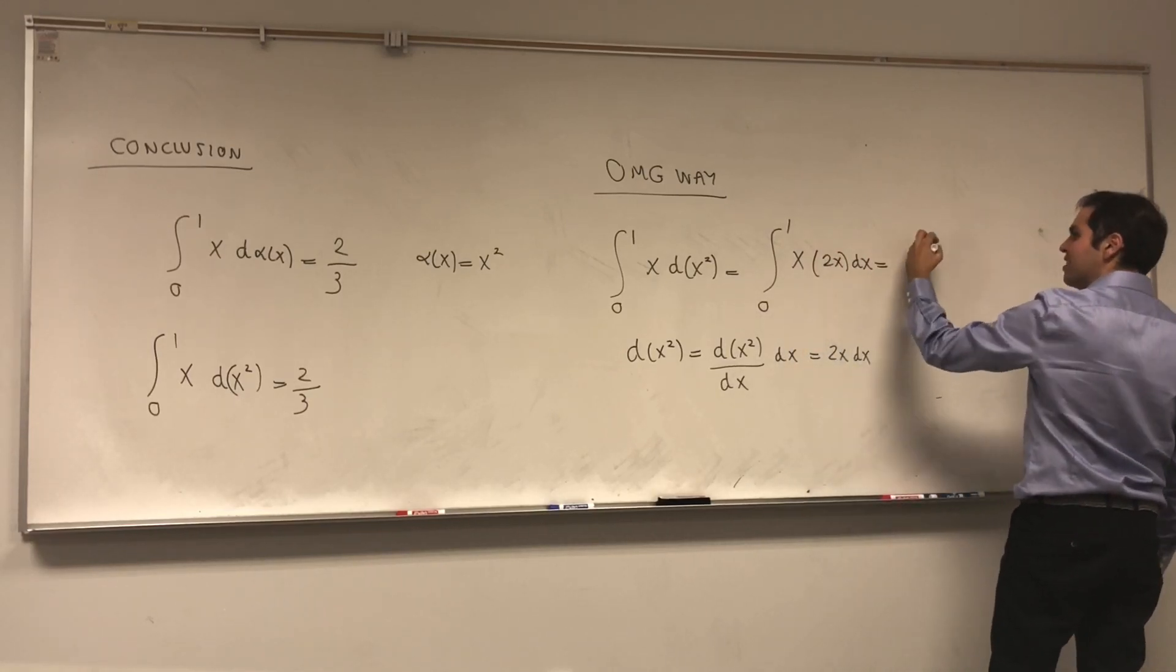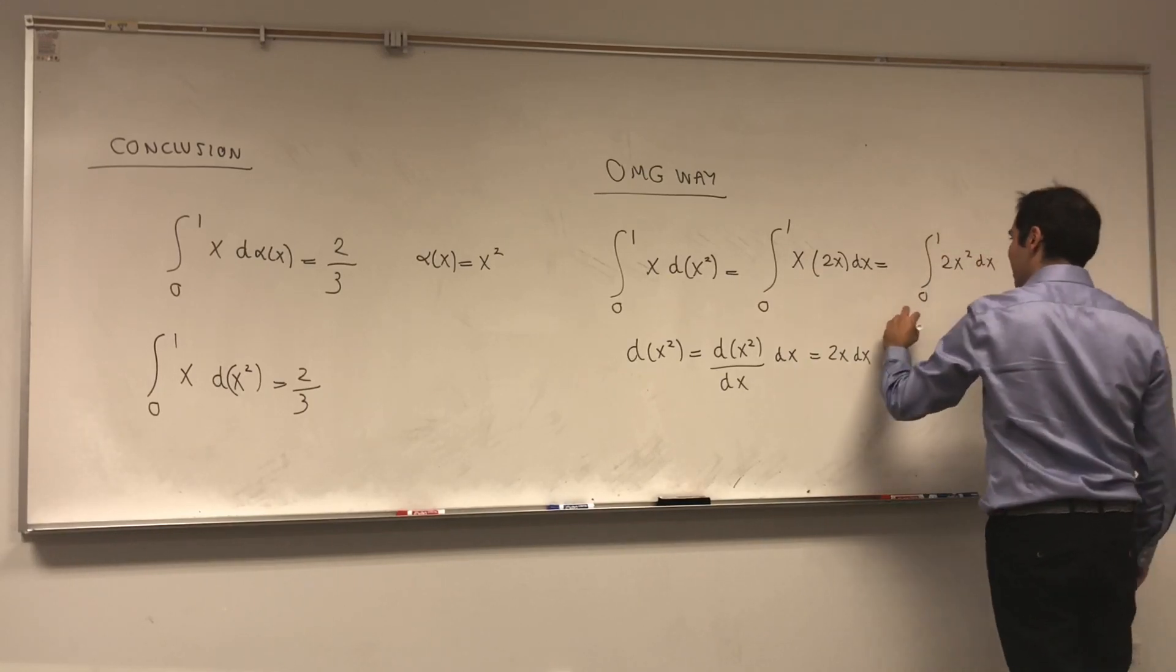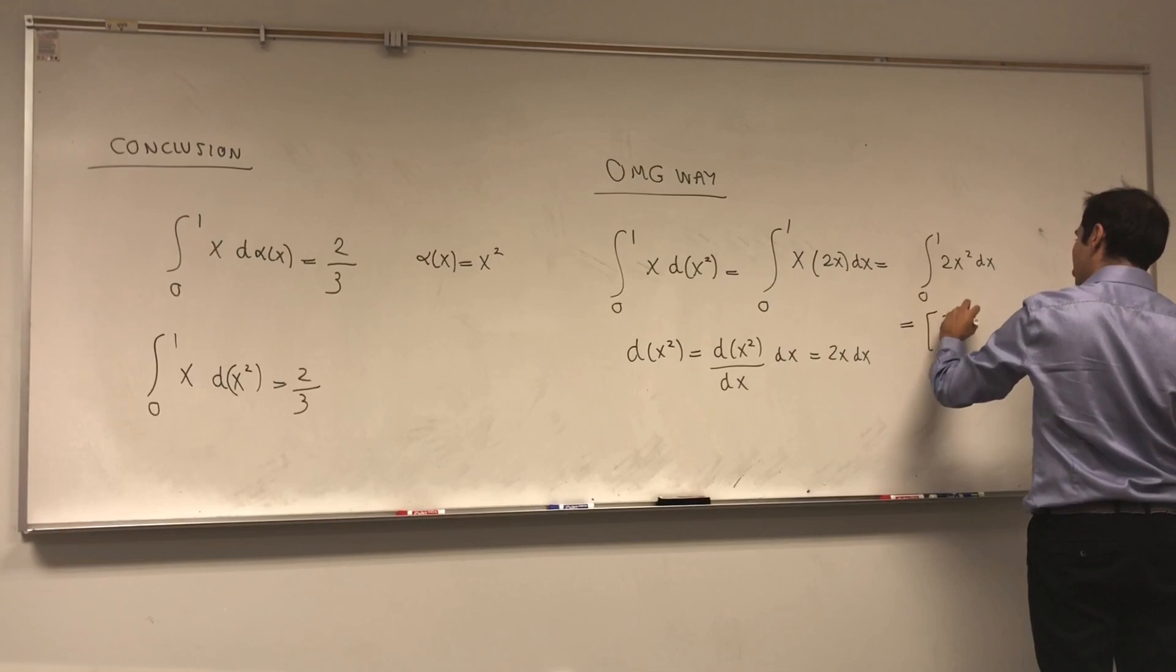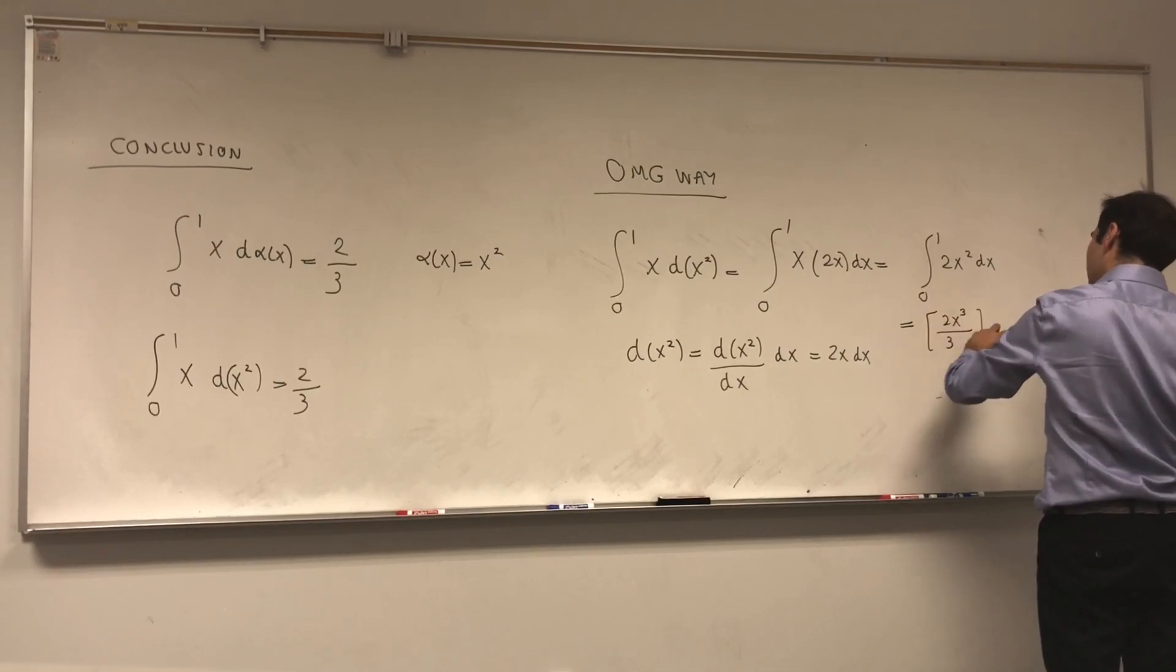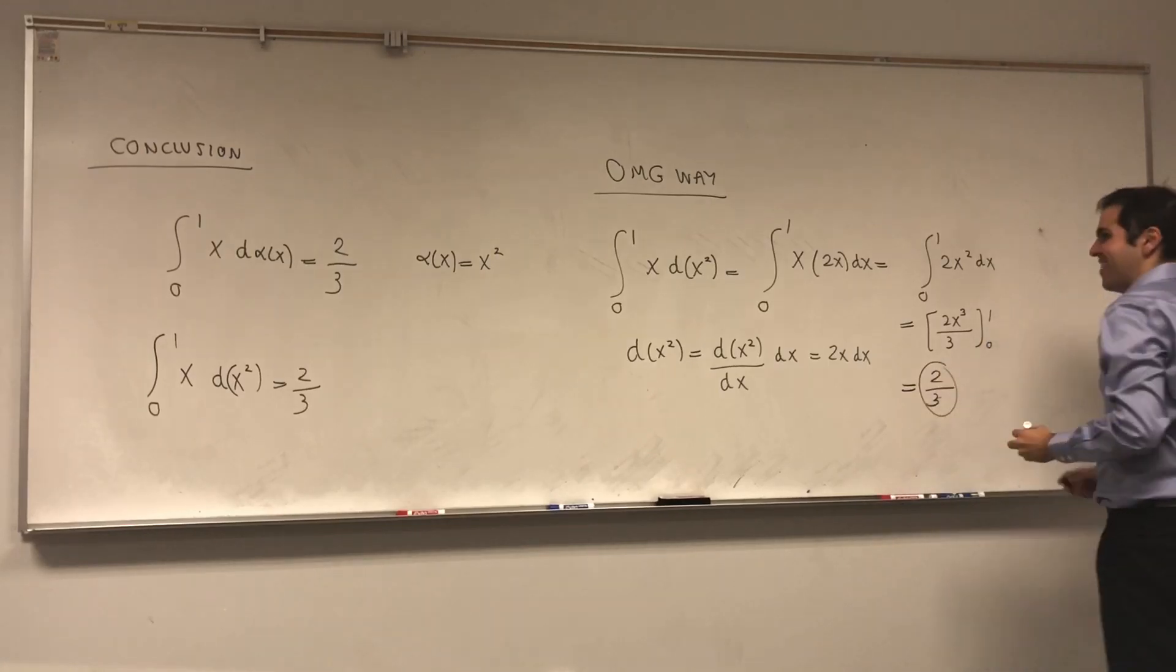So x times 2x dx. And that's, I guess, 0 to 1, 2x squared dx. And that becomes 2x cubed over 3 from 0 to 1. Which is indeed 2 thirds. The same answer that we got.